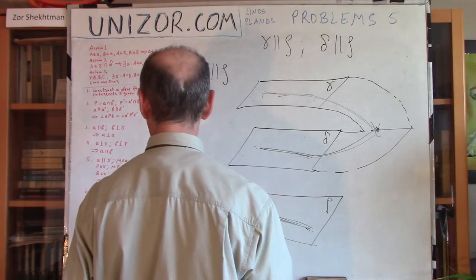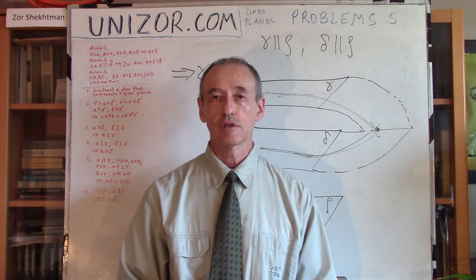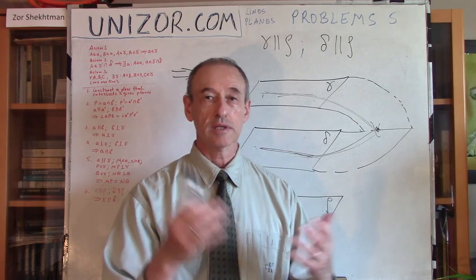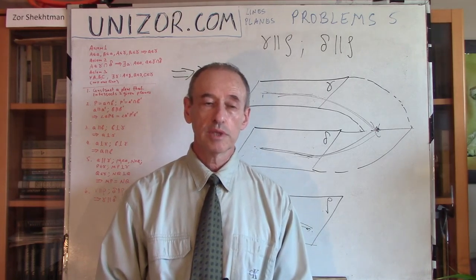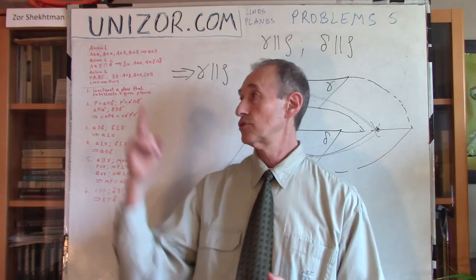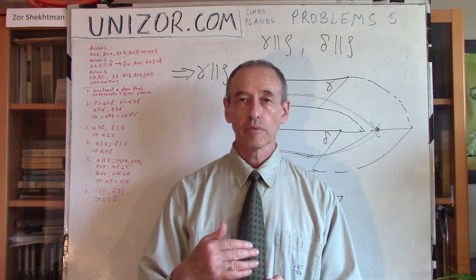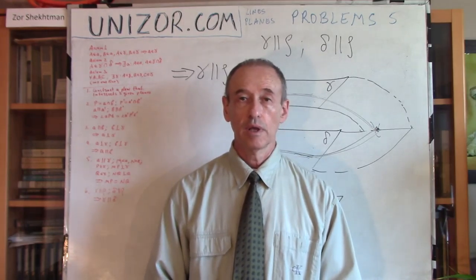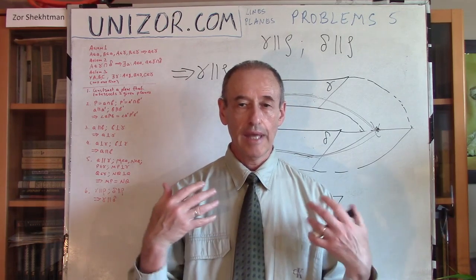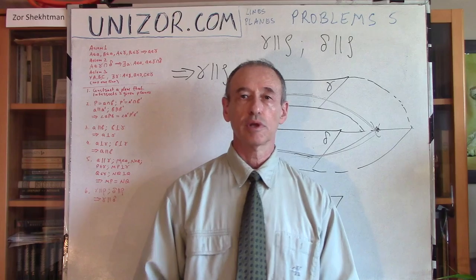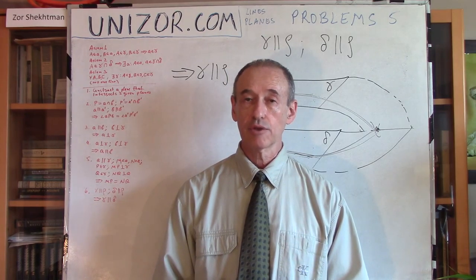That completes this set of problems — very easy problems. As you see, maybe I made just one extra drawing or construction to prove these statements. These are easy problems. What I suggest you do is go to the website unizor.com, look at the conditions of these problems, look at what they are stating, and try to either replicate or come up with a different proof of what I just did. It will probably better educate you in relatively strict logic, which we are trying to achieve. That's it. Thank you very much, and good luck!